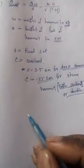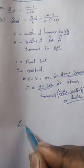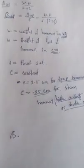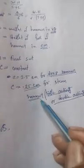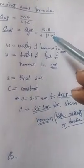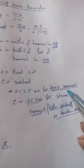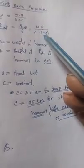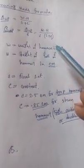For the drop hammer formula for QAP, if we use a steam hammer we have to put the value of C equals to 0.25 in this equation. And if we use a drop hammer, then we have to put the value of C equals to 2.5 in this equation.